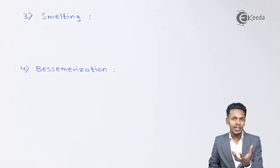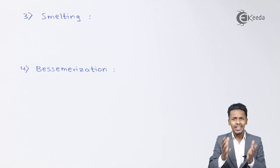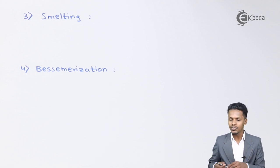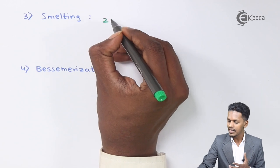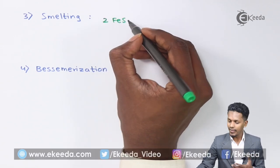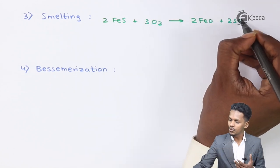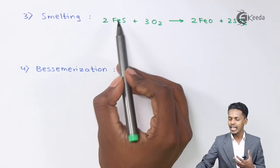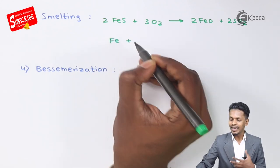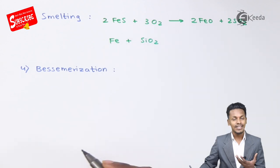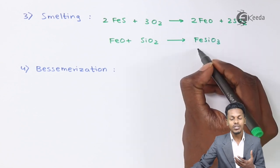In the blast furnace, the remaining impurity is removed and we obtain matte. The roasted ore reacts with carbon to remove the impurity. Specifically, 2 moles of FeS react with 3 moles of O2 to give 2 moles of FeO and 2 moles of SO2 — this removes the FeS impurity. The FeO then reacts with SiO2, which acts as a flux, forming FeSiO3, which is a fusible slag that is removed.